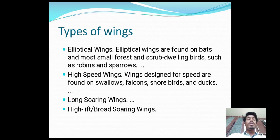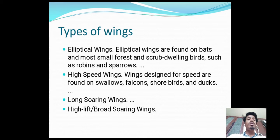What are the types of wings? We have elliptical wings, high speed wings, long soaring wings, and high lift broad soaring wings. Elliptical wings are found on bats and most small forest and scrub-dwelling birds, such as robins and sparrows.